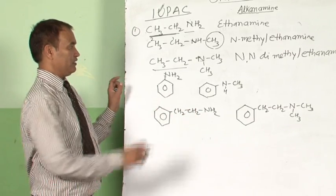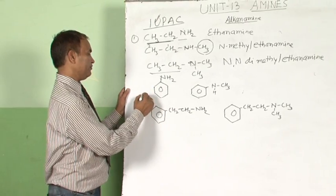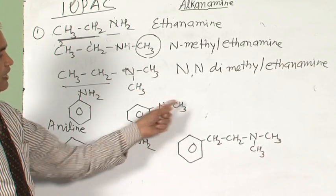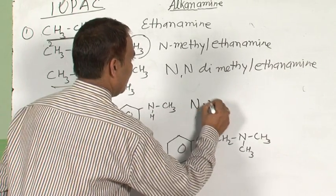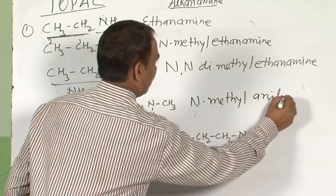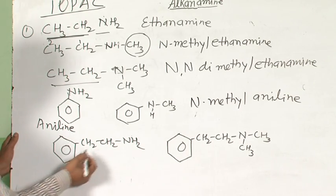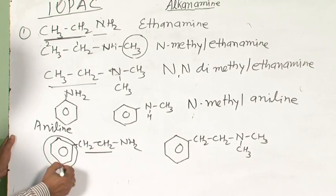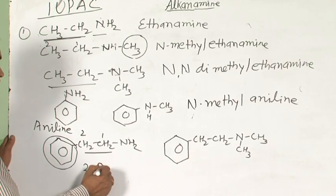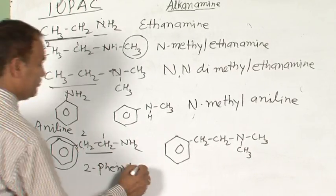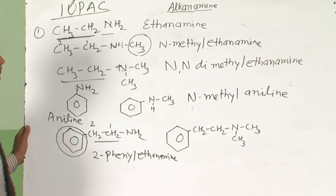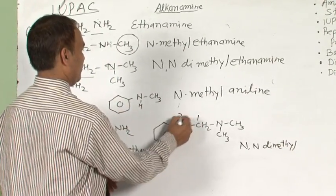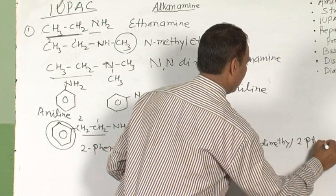Here are some examples of aromatic amines. Aminobenzene — the IUPAC accepted name is aniline. Just like aliphatic amines, here we name the substituent at nitrogen: N-methylaniline. In the last example, the phenyl group is a substituent to the alkane chain, so its name is 2-phenylethanamine. And with two methyl groups at nitrogen: N,N-dimethyl-2-phenylethanamine.